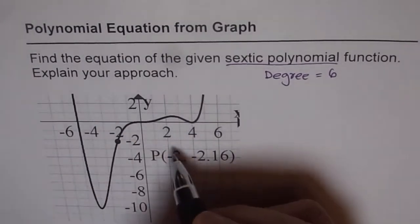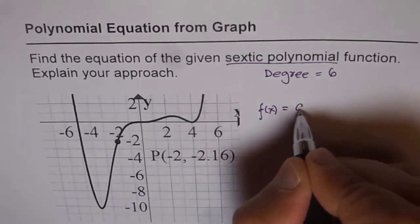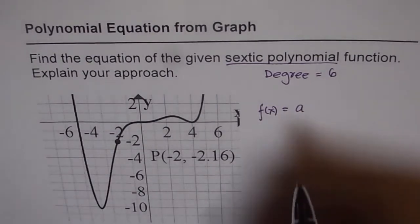Now let us write down the equation. To write down the equation we can say f of x is equal to a times. So always start with this number a which is kind of a part of your leading coefficient.